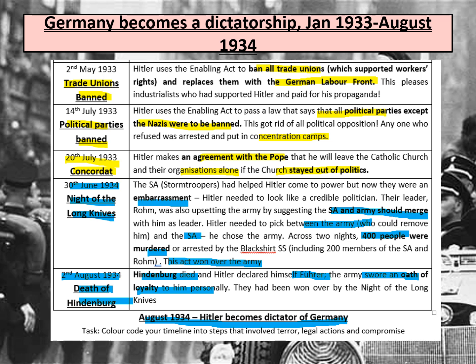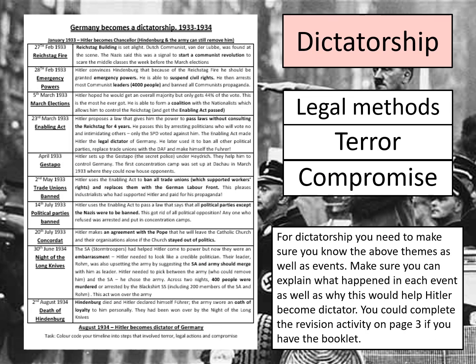Make sure you know about those events. It's worth bearing in mind that it's always a good idea to try and categorise this in case you get an eight or twelve mark question on it. You might want to know about the different themes and different ways Hitler became dictator. We need to know which methods were legal, which involved terror, and which involved compromise.